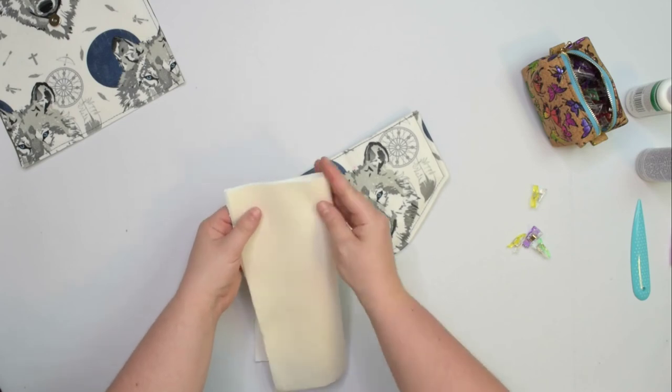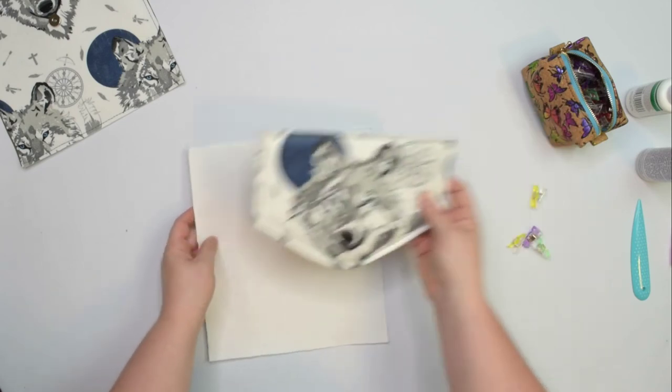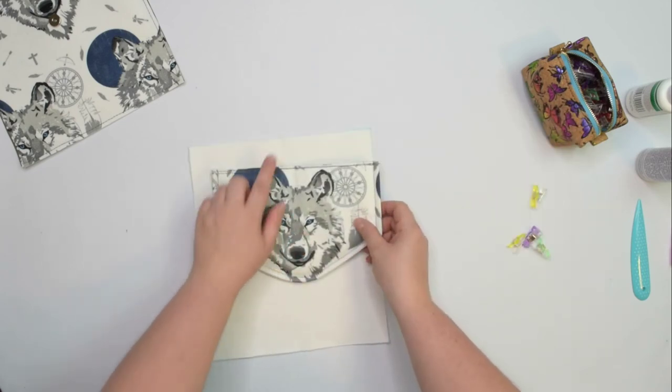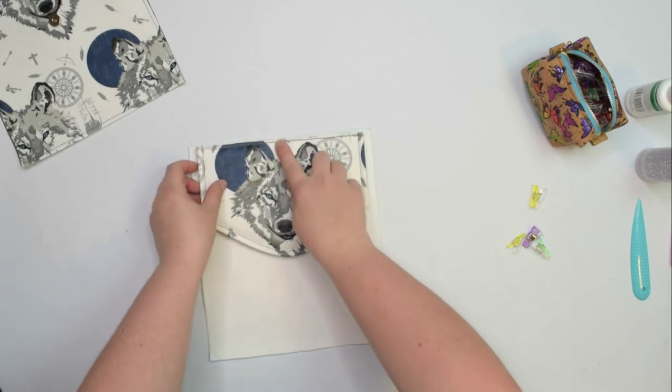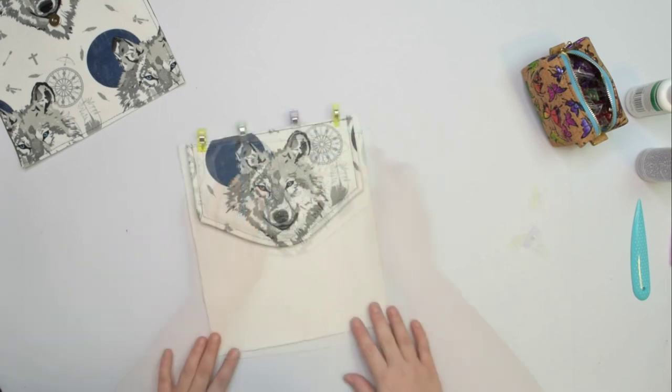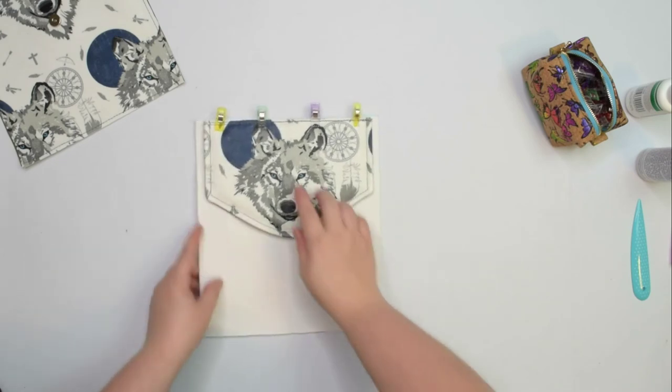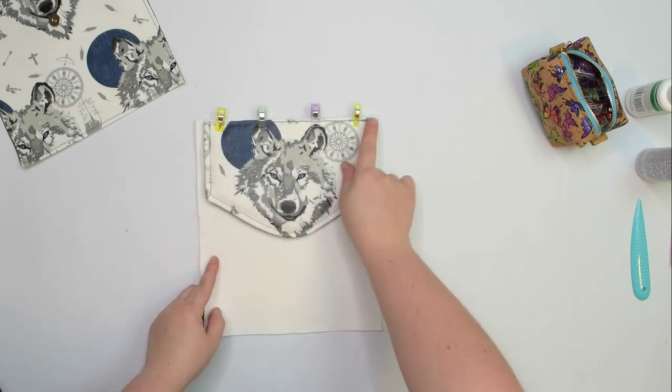With right side facing up, place the flap on top of the middle panel, match the midpoints and pin along the top edge. We're going to baste them together using 5mm seam allowance.